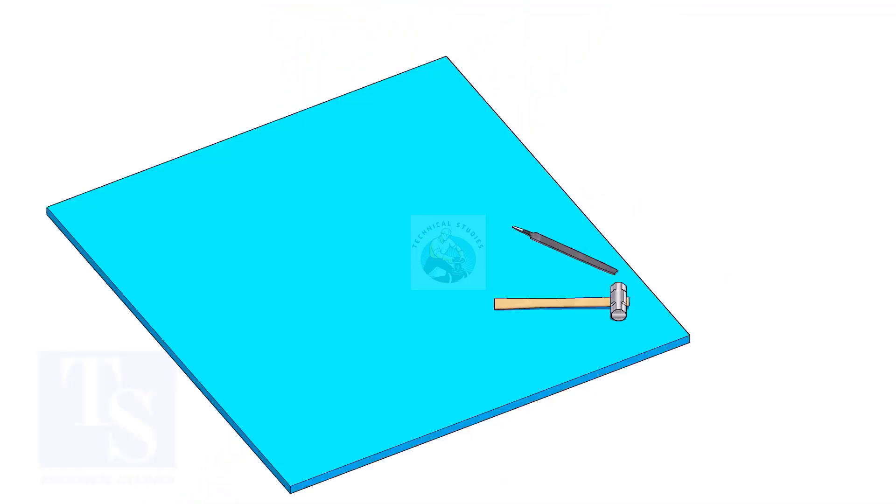The flange face may get damaged during fabrication. Use a non-metallic sheet like a Teflon sheet, thin hardboard, or piece of CNAF gasket sheet, as shown in the video.